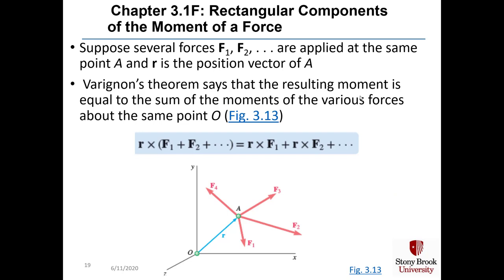Suppose several forces are applied at the same point A, and r is the position vector of A relative to origin O. Varignon's theorem states that the resultant moment of all forces about O equals the sum of the individual moments: r cross (F1 + F2 + ...) = r cross F1 + r cross F2 + ..., summing all forces acting at point A.